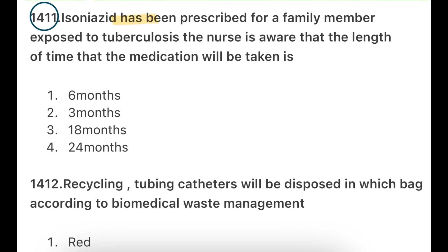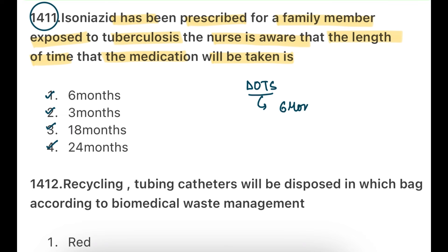The first question: IsoniAZID has been prescribed for a family member exposed to tuberculosis. The nurse is aware that the length of time the medication will be taken is — options: 6 months, 3 months, 18 months, 24 months. The answer is DOTS therapy, which is approximately 6 months. IsoniAZID, Pyrazinamide, Ethambutol, Streptomycin — these are given to the TB-exposed patient to eliminate the tuberculosis bacteria. So the right option is 6 months.